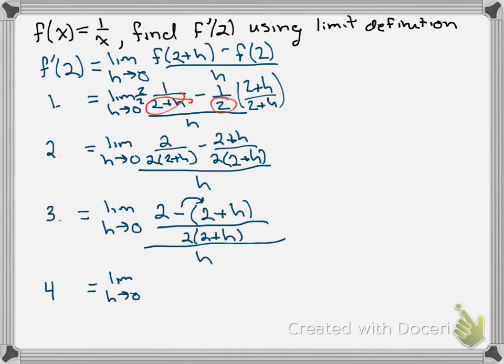I only need to distribute this negative. So I have 2 minus 2 minus h over 2 times 2 plus h. And now we can write it all over h, but let's write it as 1 multiplied by 1 over h. And there's the conclusion of step 4.